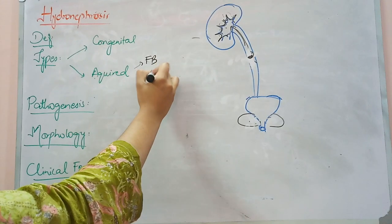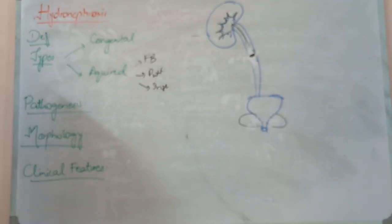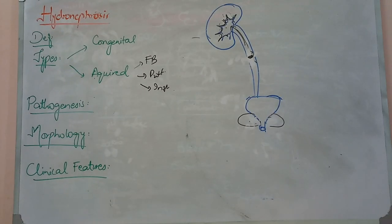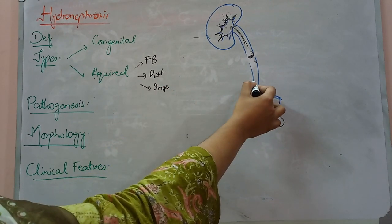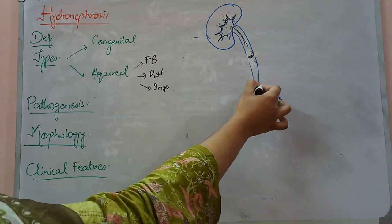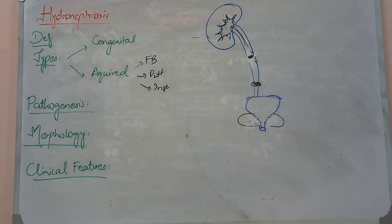The third condition causing hydronephrosis is inflammatory. Inflammatory conditions — for example, if there is inflammation of the prostate, or prostatitis, or urethritis, the inflammation causes swelling and edema. Urethritis, or inflammation of the urethra, and any such inflammation can cause obstruction.